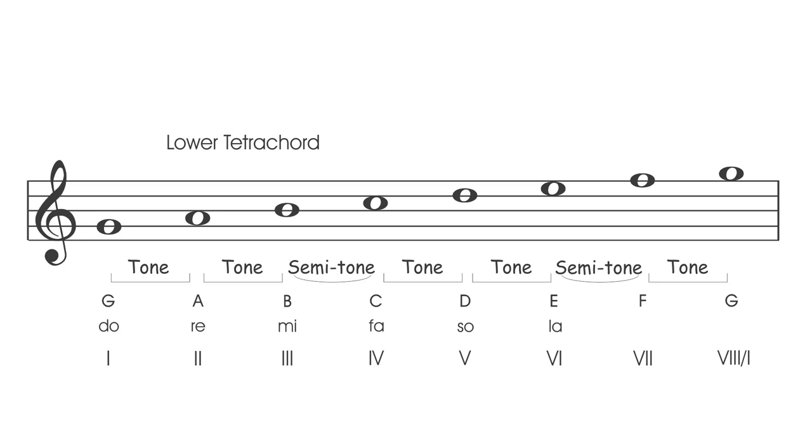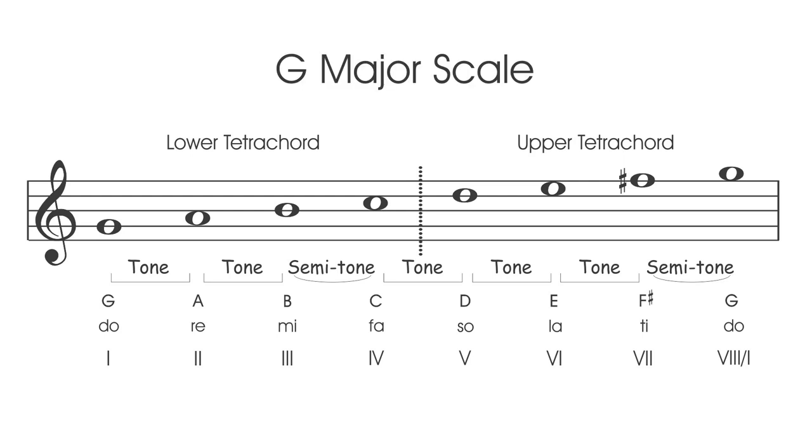To complete this scale, we need to open up the interval between the sixth and seventh by raising the F to F sharp, which will in turn close the interval between the seventh and eighth, giving us a semitone, creating the Ti Do effect that is necessary to complete our G major scale.